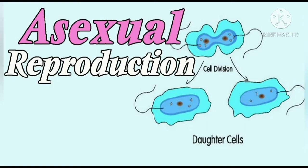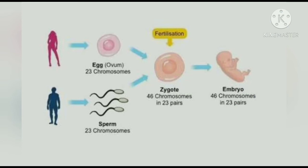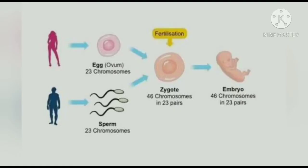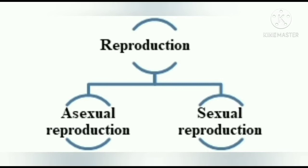The second type of reproduction is Sexual Reproduction. Here, reproduction involves gametes. Male and female gametes are present, and fusion — that is, fertilization — takes place between them, and a new organism is produced. If an organism gives rise to a new individual with the involvement of gametes, that is called Sexual Reproduction. So: Asexual Reproduction is without the involvement of gametes; Sexual Reproduction is with the involvement of gametes.